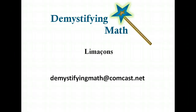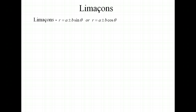Welcome to Demystifying Math. In this lesson, we're going to be discussing limaçons. A limaçon is a graph that is drawn on the polar grid. The general equation for a limaçon is r equals a plus or minus b sine theta, or r equals a plus or minus b cosine theta.